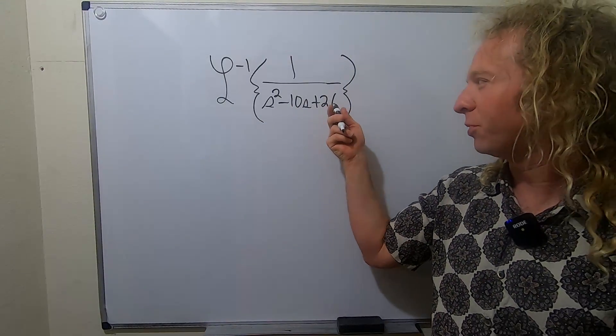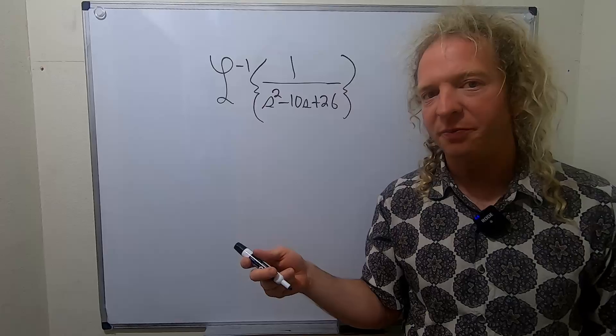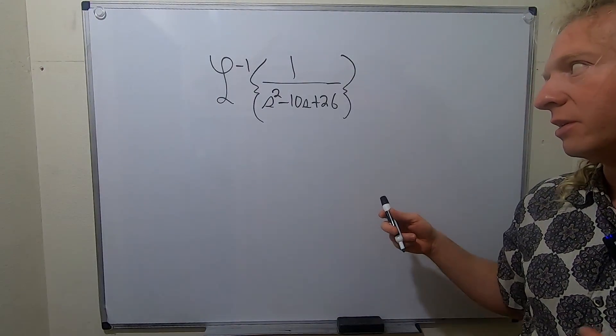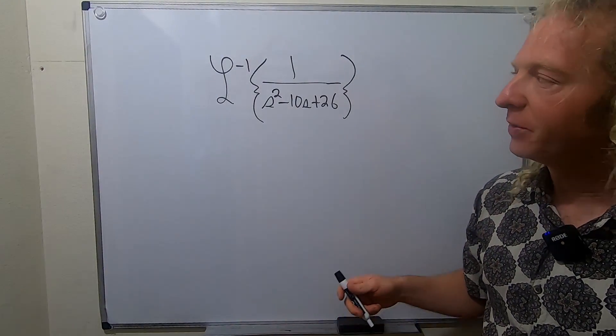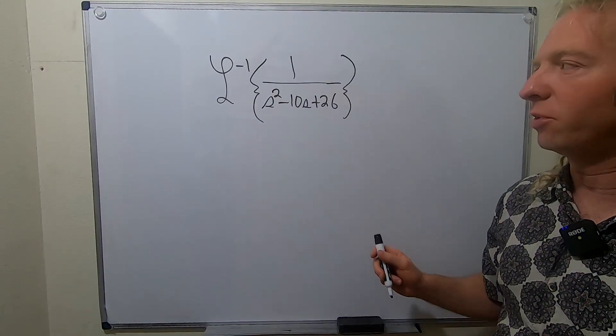So we need two numbers that multiply to 26 and add to negative 10. Well, 2 times 13 is 26, but that's not going to give us negative 10. So we have to take a different approach.